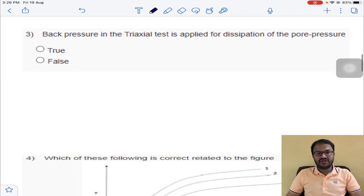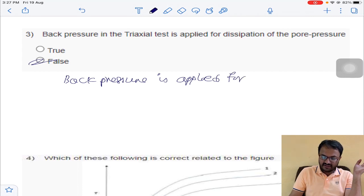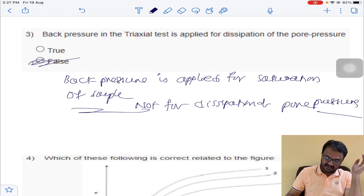Very conceptual question. Back pressure in the triaxial test is applied for dissipation of pore pressure. Back pressure is applied only to saturate the sample. It is not for the purpose to dissipate the pore water pressure. This is a false statement. I am writing here: back pressure is applied for saturation of sample, not for dissipation of pore pressure. The answer is false for question number 3.